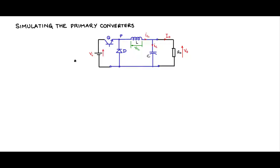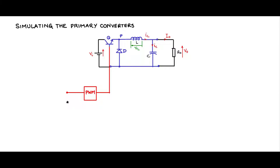Let us now see how we will simulate the primary converters. I will supply in the resource portion of the course website the simulation files for the buck, the boost and the buck-boost converters. We have discussed everything about the primary converters except how to give the gate pulse signal to the controlled switch. I am passing it through a PWM generator block during simulation and giving a voltage which is proportional to duty cycle. If I want a lower duty cycle I will decrease the voltage, higher duty cycle I will increase the voltage, and this will compare with the triangle waveform to generate the PWM and these signals will turn on this BJT.